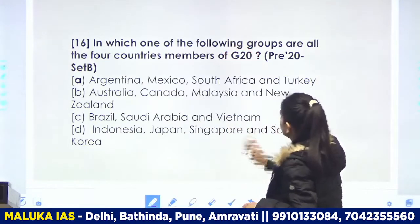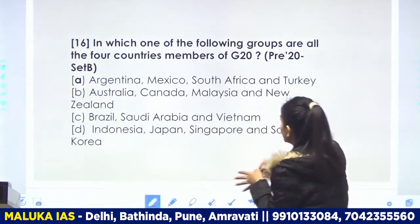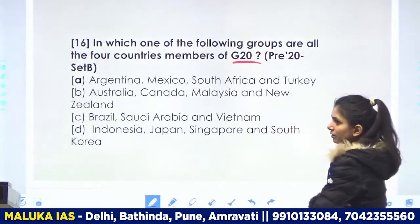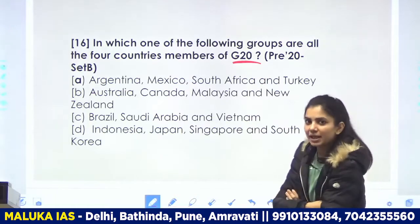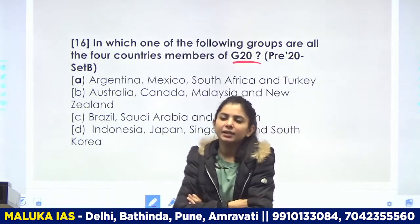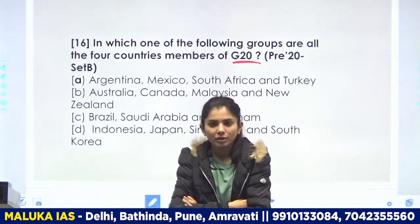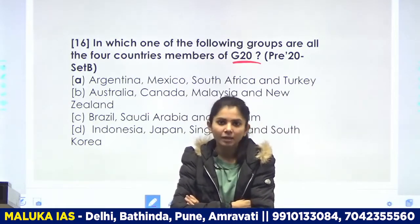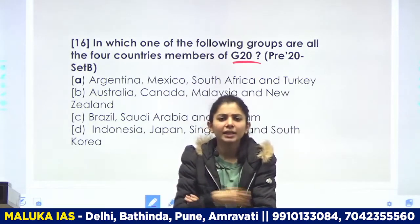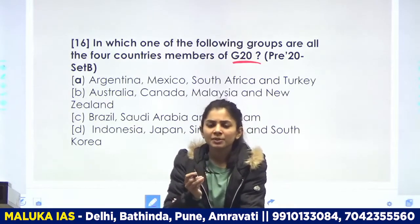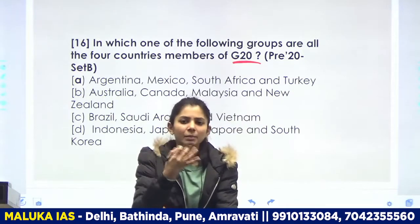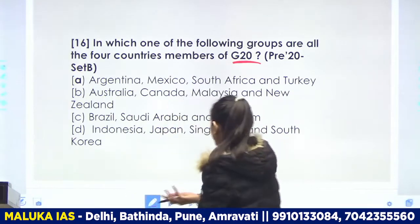Ab dekhna hai ki G20 mein 4 countries kaunsi hain. Yeh memory-based question hai. Agar aapne acche se pada hai toh aap kar sakoge. G20 mein 20 countries hain — naam yaad rakhna thoda mushkil hai, but karna padega. Easiest way hai mapping — ek world map banao, G20 ki countries marking kar do, us map ko bar bar dekho, yaad ho jaega.